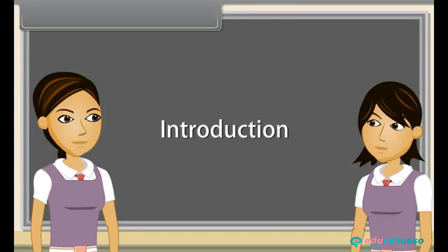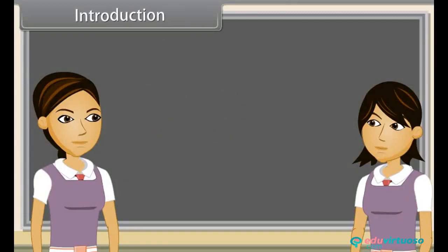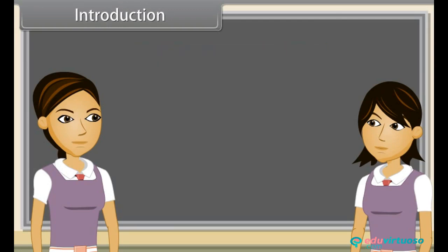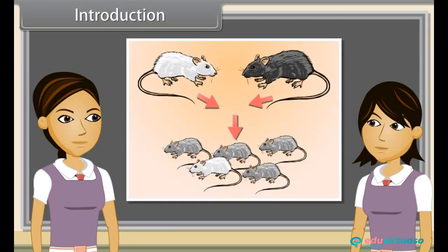Reproduction is the ability of all organisms to produce young ones similar to themselves in most characters. We can also say the process by which a species is continued is called reproduction.